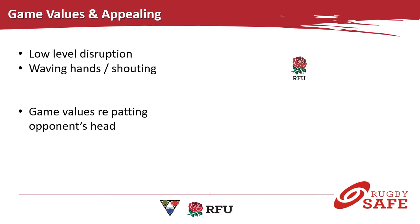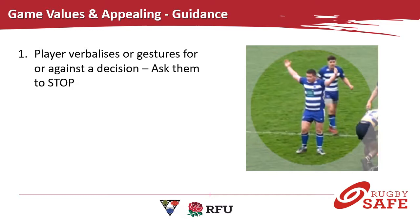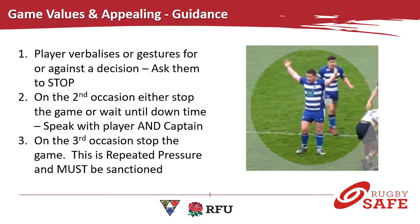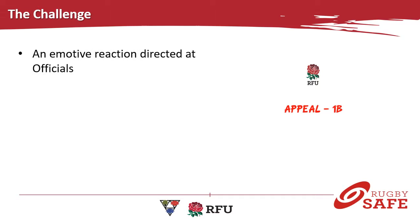Here the players are verbalising or gesturing against an action. Just ask them to stop — 'stop appealing, put your hands down' — and on the second occasion, stop waving at me. You can either stop the game or wait until downtime. In the community game and lower level league games it's probably best to wait until downtime, speak with the player and the captain. Bring them both over: 'Captain, I've already asked your team to stop waving their arms and appealing at every breakdown. I'm now asking you formally to make sure it stops. If it carries on, I will have to increase sanctions.' And on the third time, stop the game again and penalise. It's repeated pressure — you must sanction it, and if it continues, raise sanctions accordingly.